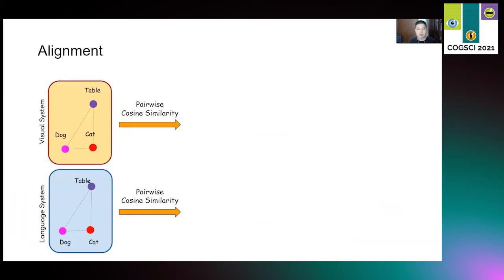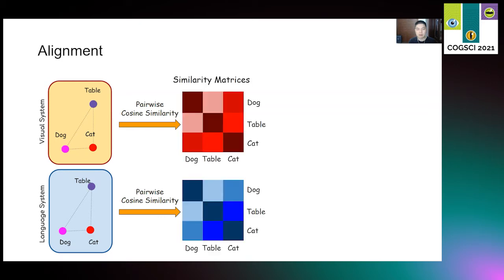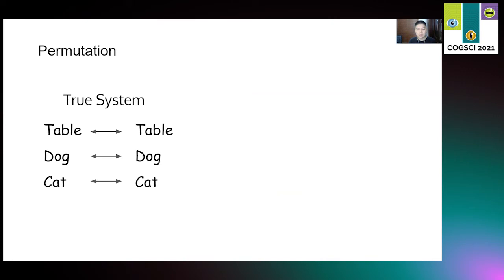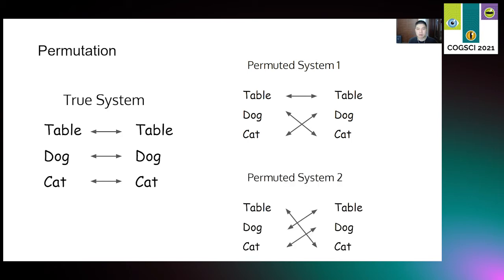To estimate the alignment, we asked whether nouns' linguistic similarities are correlated with their visual similarities. In each modality, we compared the pairwise similarities of all words' vectors using cosine similarity, and then we generated similarity matrices. We then computed the correlation between the linguistic and visual similarities using Spearman's rank correlation coefficient. To assess the strength of this correlation, we compared the true system to simulated alternative systems produced by permuting the true mapping system. We generated many permitted systems. For example, in permitted system 1, two mappings are incorrect, while in permitted system 2, all three mappings are wrong. We control the proportion of incorrect mappings by sampling 100 alternatives for each level of incorrectness.